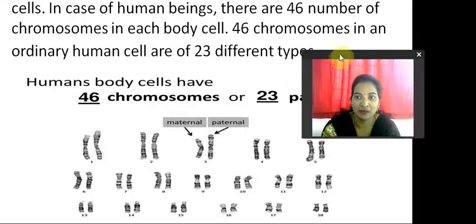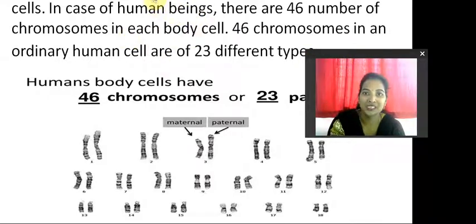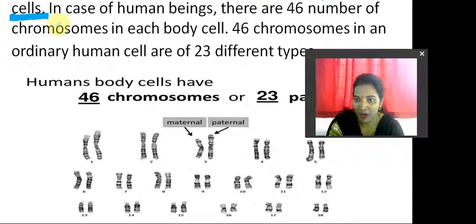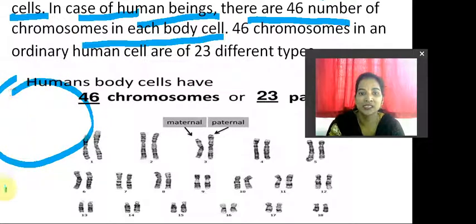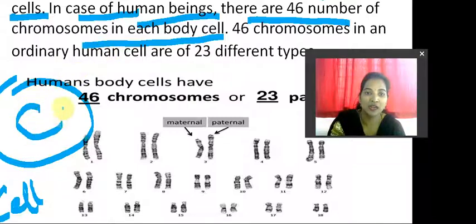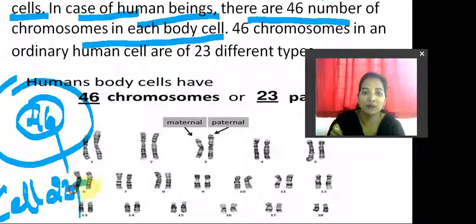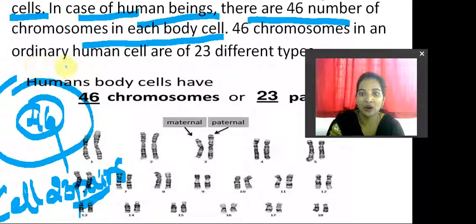Next, the number of chromosomes. Each species has a fixed number of chromosomes in each cell — there won't be any addition or deletion unless a mutation occurs. In human beings, there are 46 chromosomes in each body cell, present in the form of 23 pairs. So 46 chromosomes in an ordinary human cell means 23 different types are present.